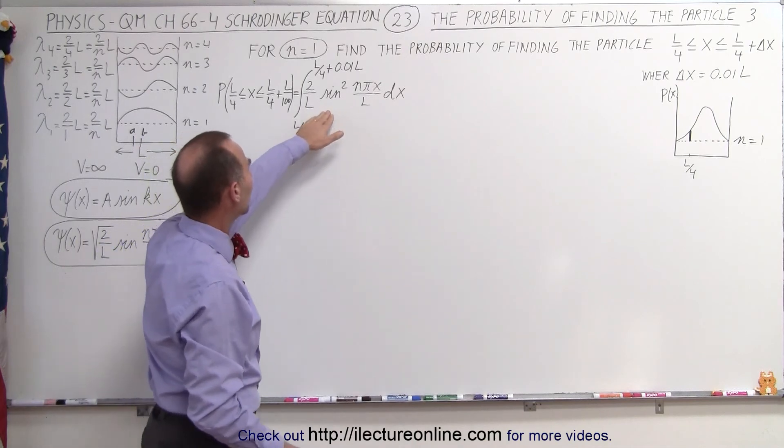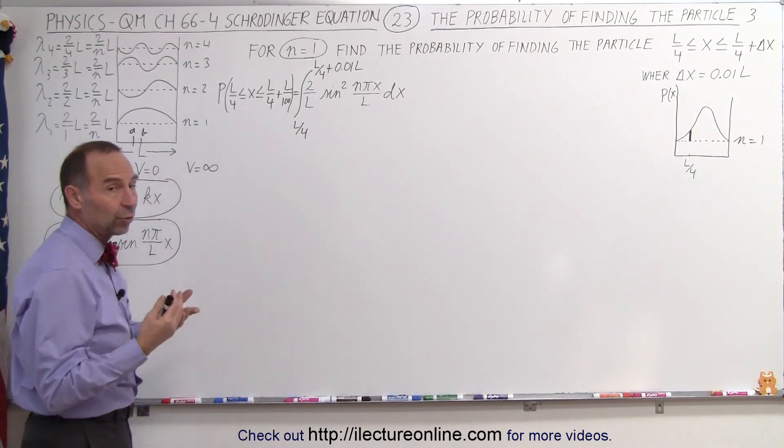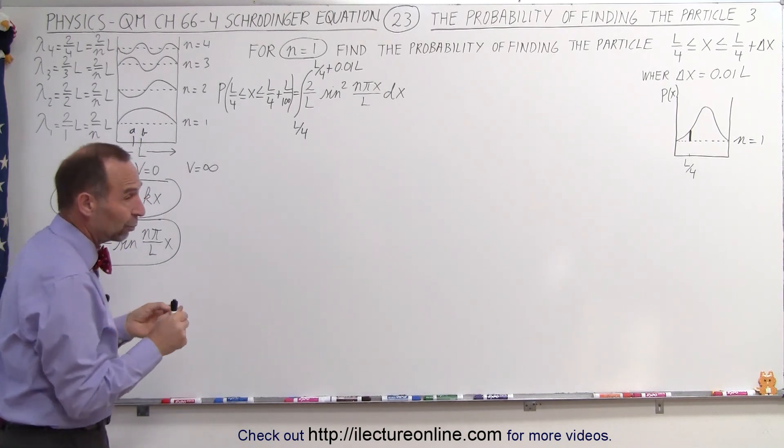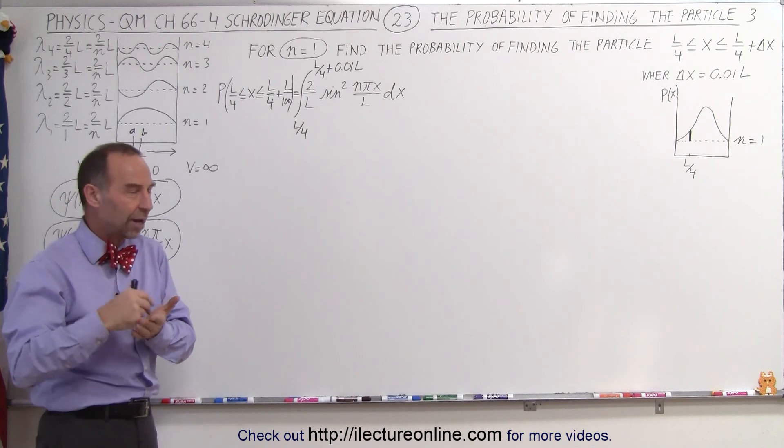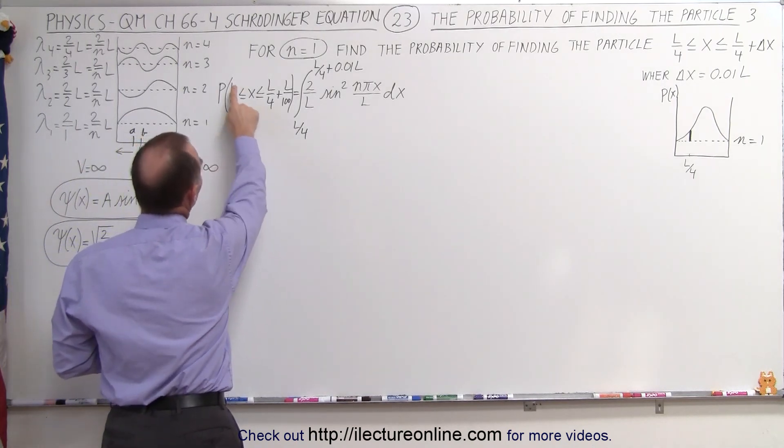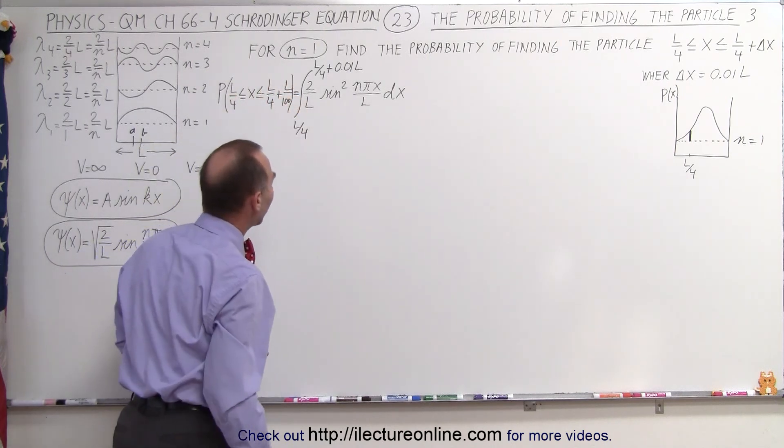We have our equation here, which is simply the product of our wave function, because the wave function does not have an imaginary part, so it's simply the product. Otherwise, we'd have to multiply the wave function by its complex conjugate. Notice we're finding the probability of the particle being between L over 4 and L over 4 plus 1 over 100 of L.